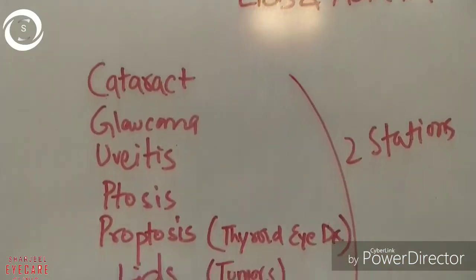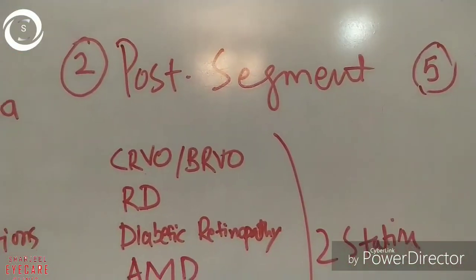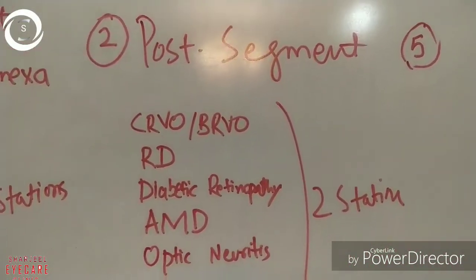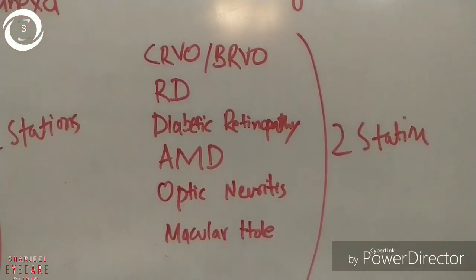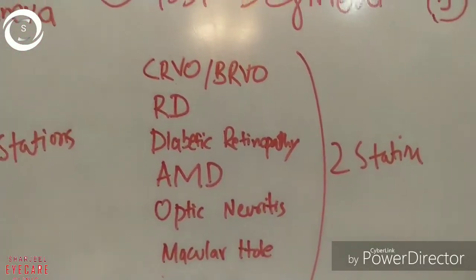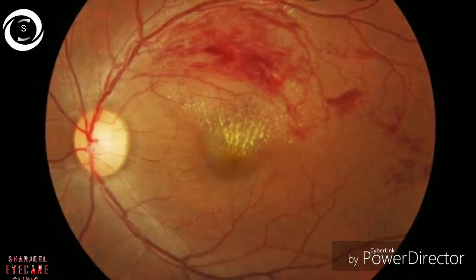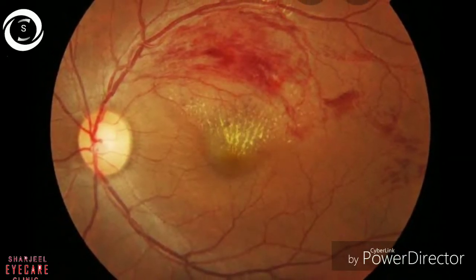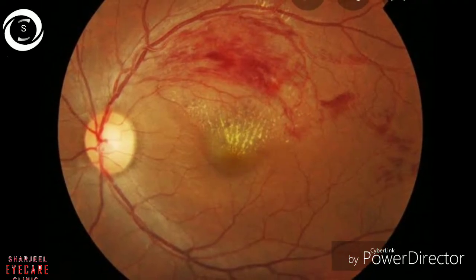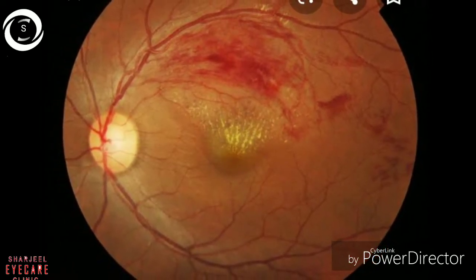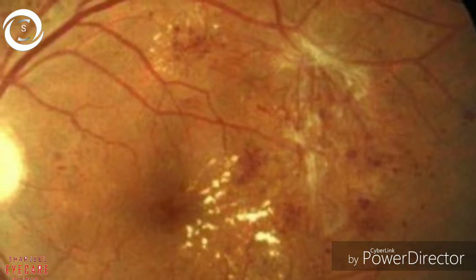The next two questions will be from the posterior segment. From the posterior segment, I will either give the picture of central retinal vein occlusion, branch retinal vein occlusion, retinal detachment, diabetic retinopathy, age-related macular degeneration, optic neuritis, or macular hole. For example, here we have shown superior temporal branch retinal vein occlusion — you will be asked to diagnose, give differentials, signs and symptoms, and management options.